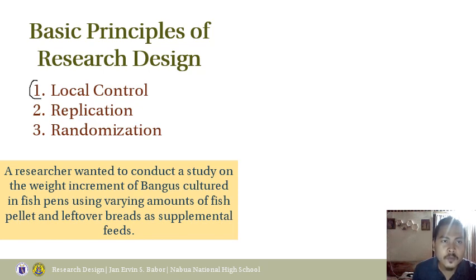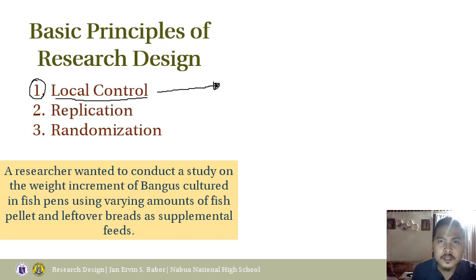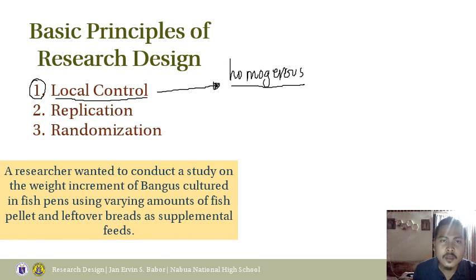The first one is the presence of local control. This means that you try to have blockings — you group experimental units in order to have a homogenous setup. You try to have a uniform set of experimental units.